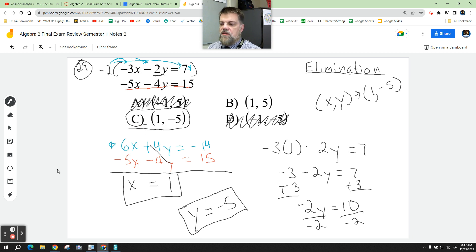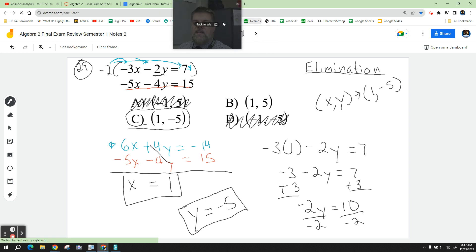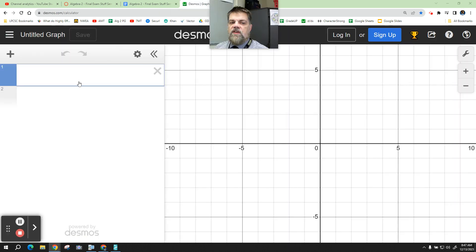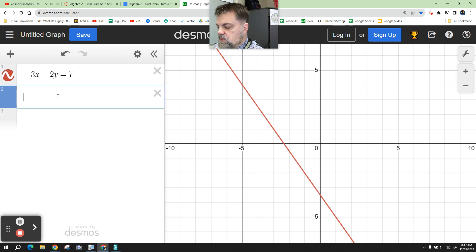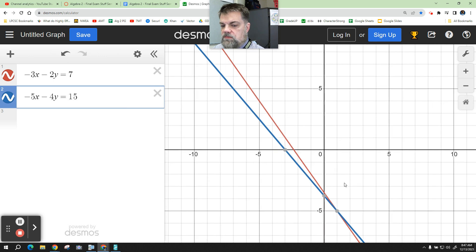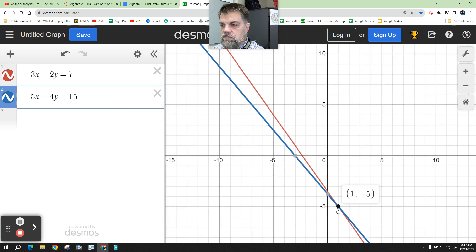So in order to double check it in Desmos, remember for a system of equations, you type in the original equations as you see them. So I'm going to type in negative 3x minus 2y is equal to 7. That's my first equation. Then I type in my second equation, negative 5x minus 4y equals 15. And look where it crosses.